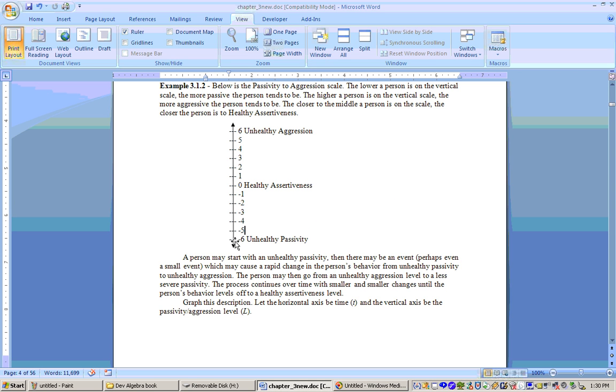So if somebody goes through phases where they're going from unhealthy passivity, which is a negative area, to unhealthy aggression over a period of time, then what would happen is you would get somebody that has their downs and their ups in this area. But that's just showing you that a graph can go negative.